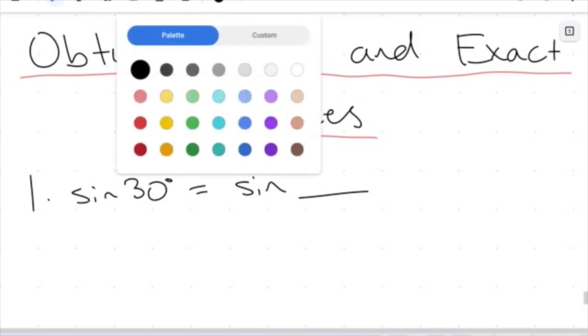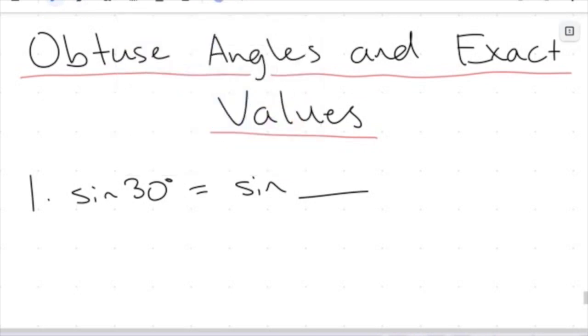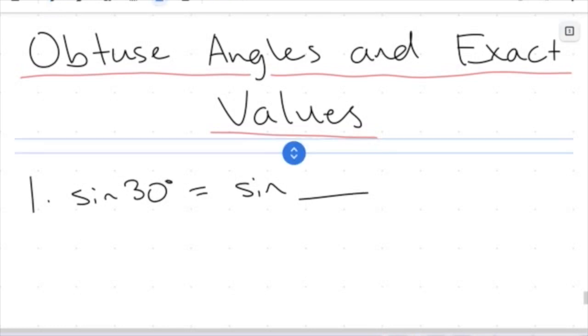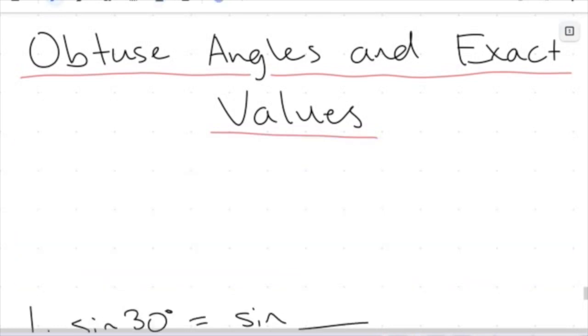Now in the last video we defined a couple of relationships, a couple of these trigonometric identities we called them. So one of those was that cos of 180 minus theta equals negative cos of theta. We also looked at sin of 180 minus theta, which equaled just regularly to sin theta.